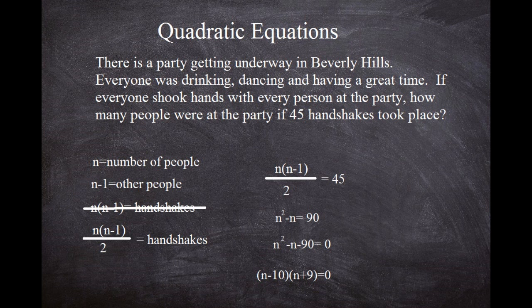So we have (n minus 10) times (n plus 9) equals zero. The reason we set it equal to zero is because zero multiplied by any number is zero — so we just need to make either factor equal to zero. Setting n minus 10 equal to zero gives n equals 10. Setting n plus 9 equal to zero gives n equals negative 9. So the two values for n are 10 and negative 9.